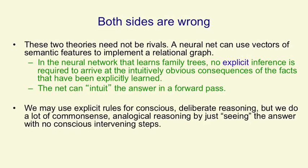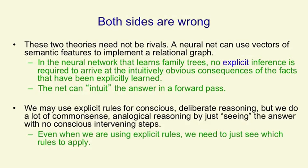We may use explicit rules for conscious deliberate reasoning, but a lot of our common sense reasoning — particularly analogical reasoning — works by just seeing the answer, with no conscious intervening steps. And even when we do conscious reasoning, we have to have some way of just seeing which rules apply in order to avoid an infinite regress.